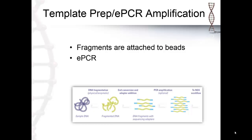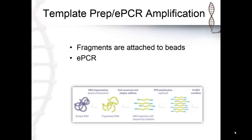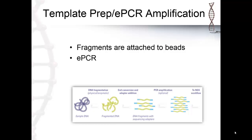Following amplification, the emulsion is broken and the amplified beads are enriched in a glycerol gradient. There is a video available that explains in greater detail how emulsion PCR works.